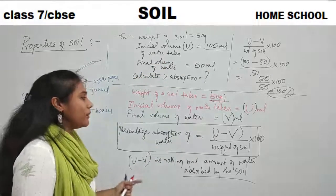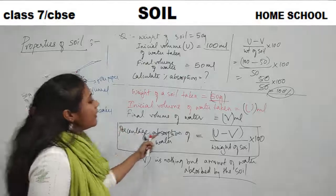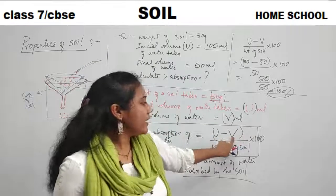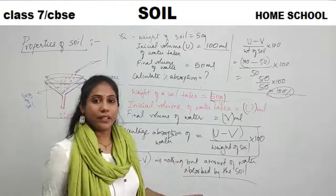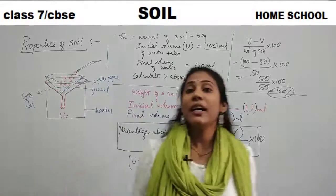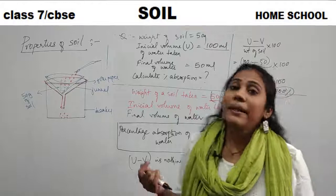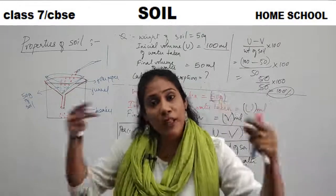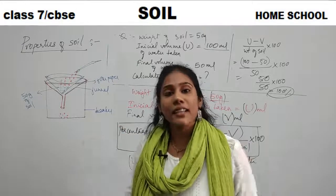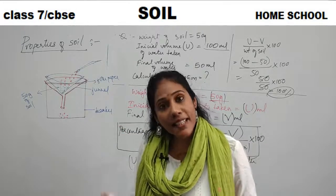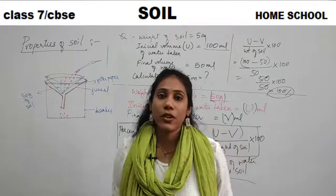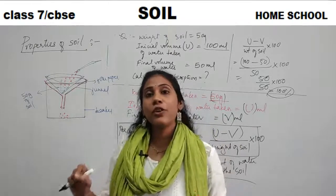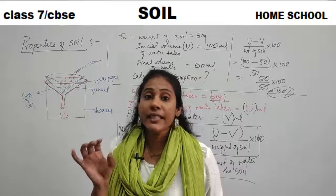You just need to remember the meaning of the formula — what u and v represent. To summarize absorption: clay soil has the highest absorption capacity, and sandy soil has the least absorption capacity. Now let's move to the next property: moisture content in soil.